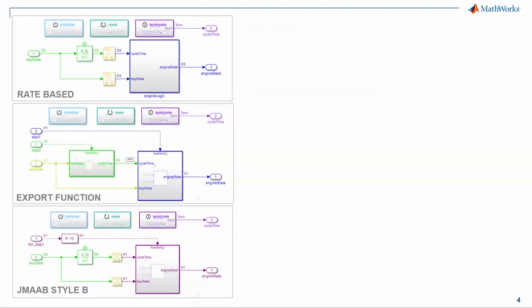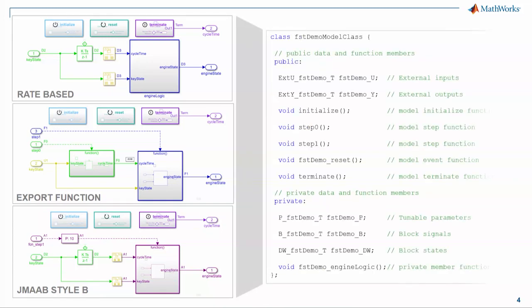Now, in 2017B, we have a lot of customers using different modeling styles. Here are three examples of code generation modeling styles primarily used by our customers. In 17B, it's now possible to generate C++ code from each of these modeling styles. And if they're configured consistently, you can even generate the same code with the public methods and private methods that you'd expect.